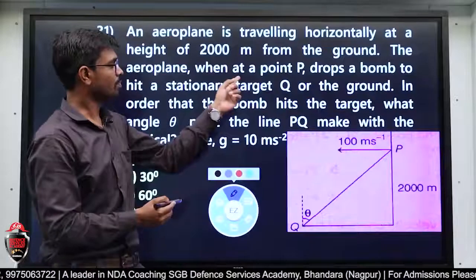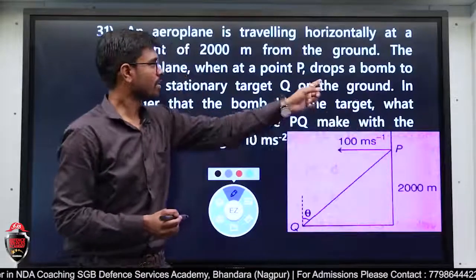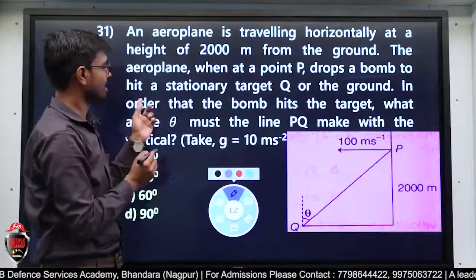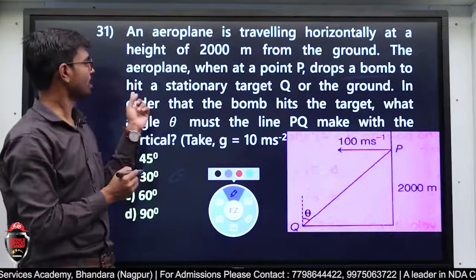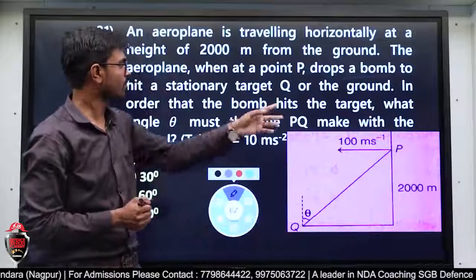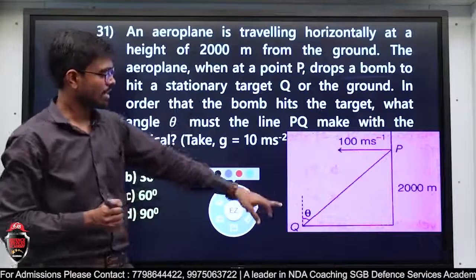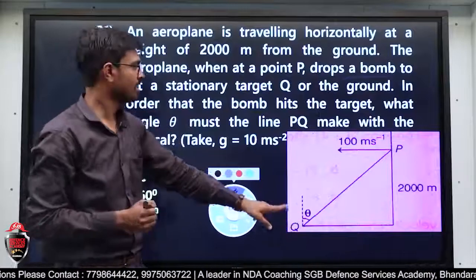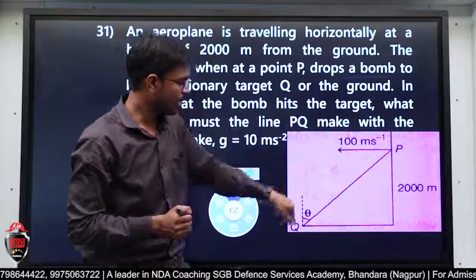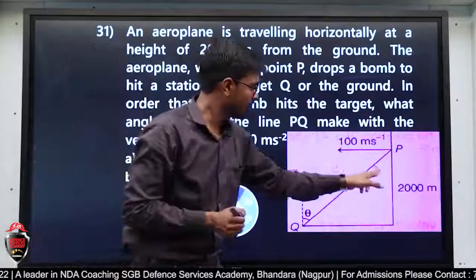When at a point P — जब वो P point पे आया — drops a bomb to hit a stationary target Q को hit करने के लिए उसने bomb drop किया। In order that the bomb hits the target, what angle theta must the line PQ make with the vertical?